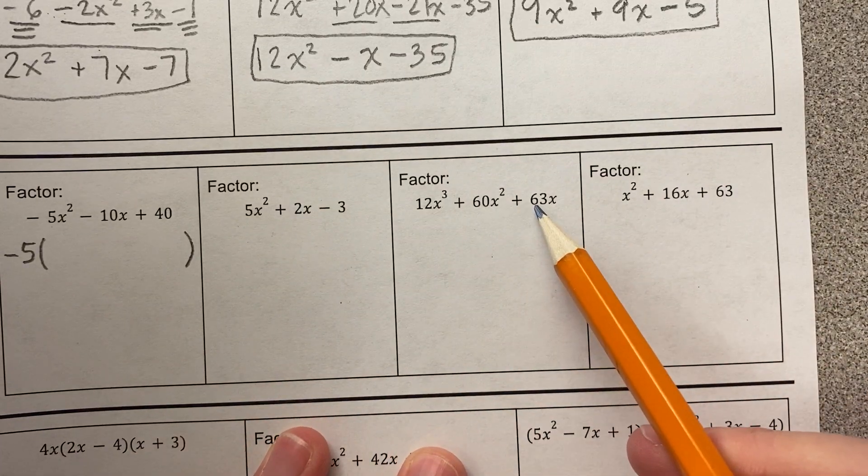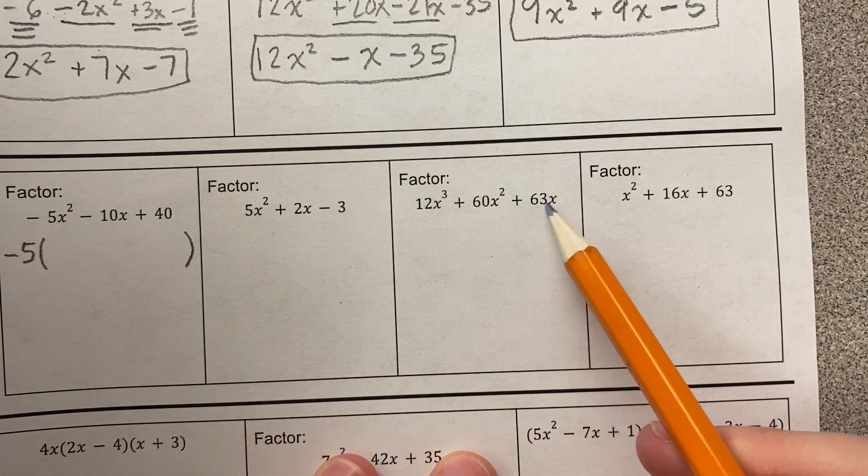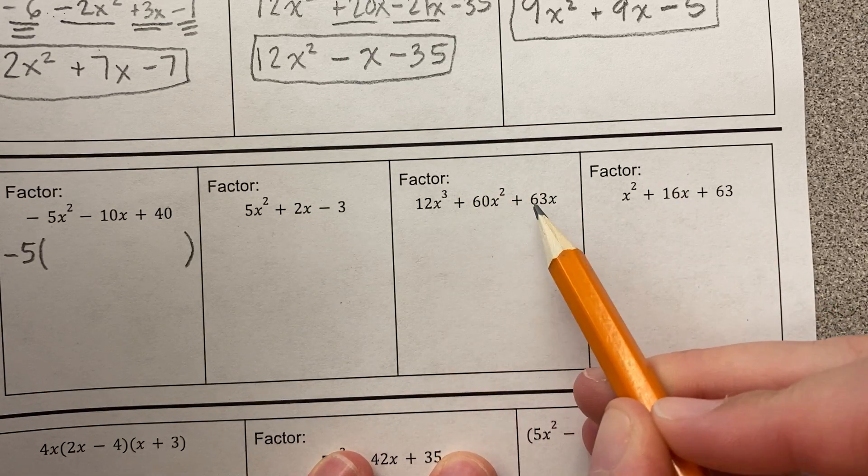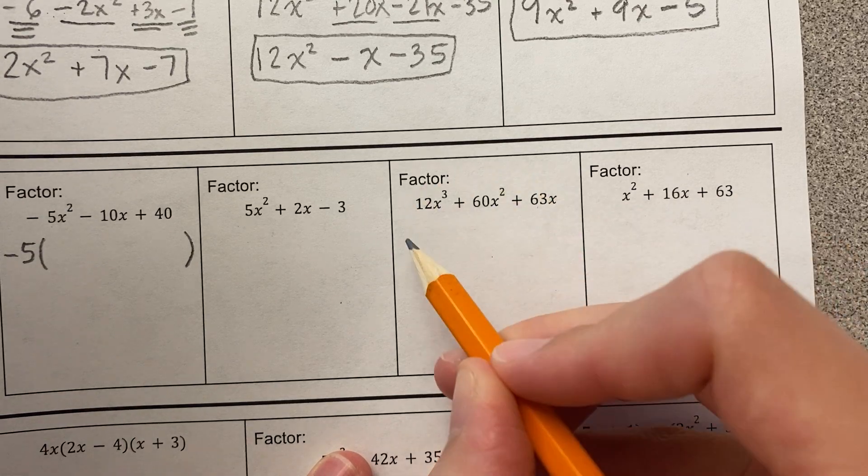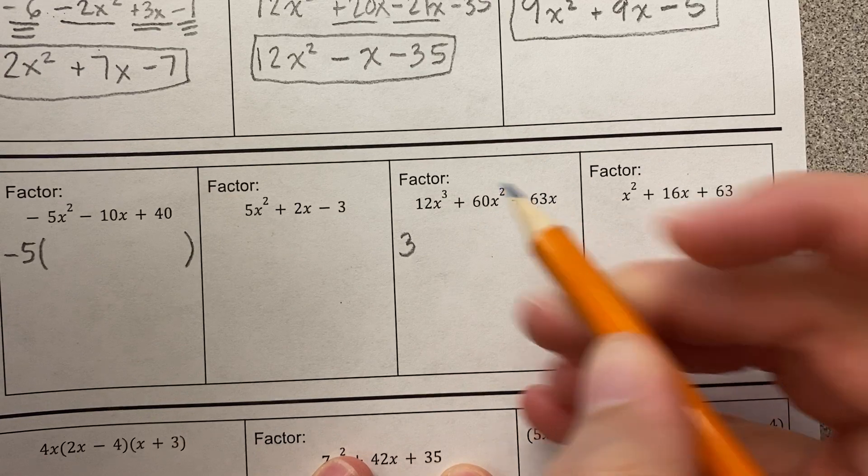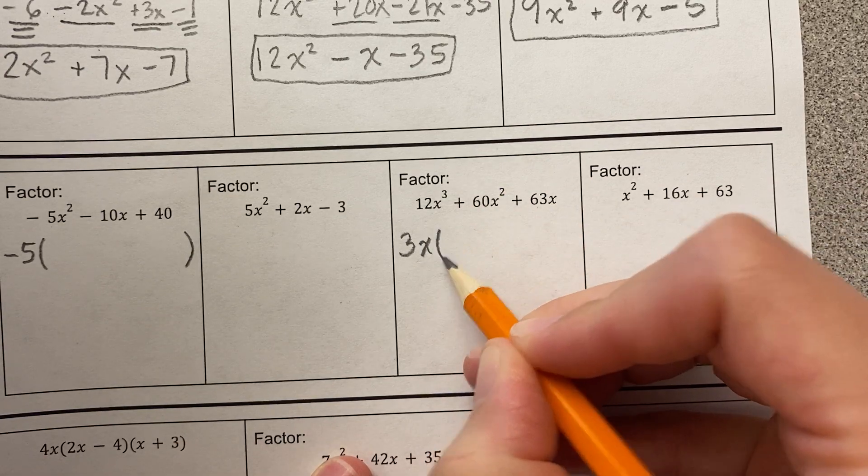I can also think, oh, six multiplies to sixty, so then that plus three wouldn't multiply, wouldn't be a multiple of six. What about four? Oh, four doesn't multiply to sixty-three either. Oh, three. Three multiplies to twelve, to sixty, and to sixty-three. I also notice that each have an x, so this one also has a GCF.